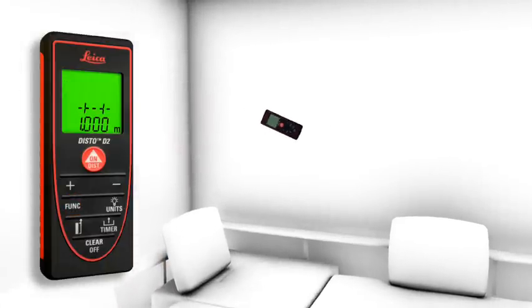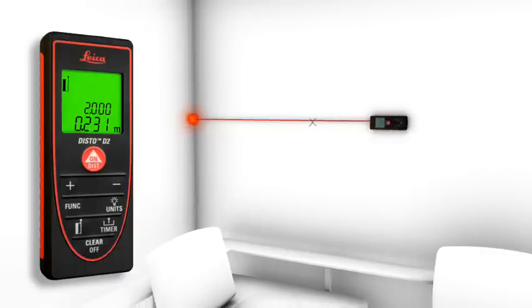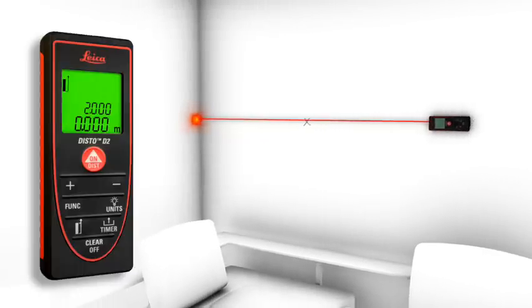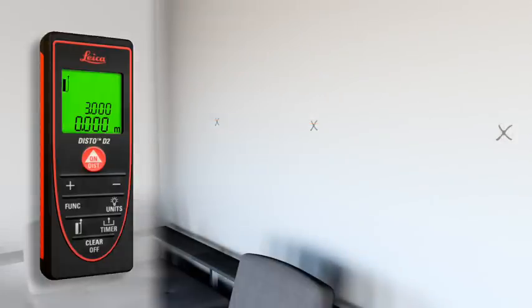The stakeout function is used to stake out equal distances. The instrument gives an audible signal as soon as a preset distance or a multiple thereof is reached.